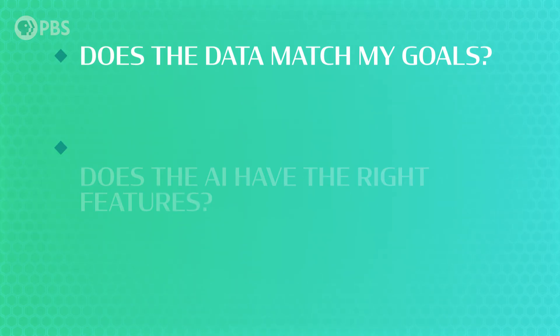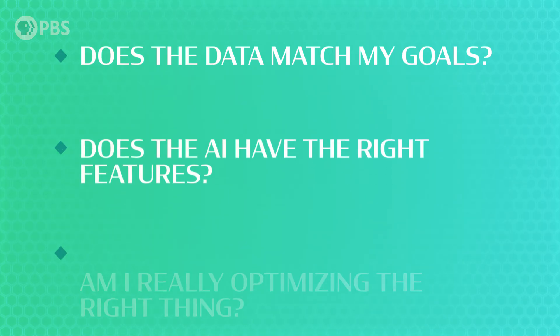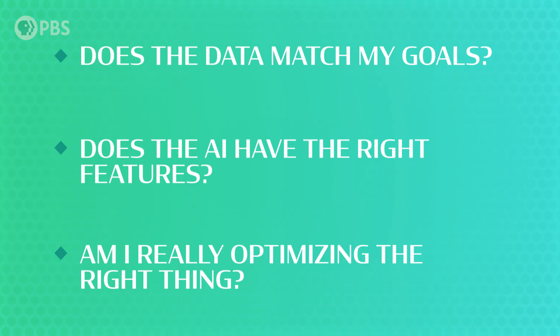It's important to note that every problem isn't this easy. For some AI, we can't just remove features that don't have clear meaning, or we might need to keep features because they're the only measurable values. In either case, it's usually extra important to have a human checking the results and asking a few important questions to avoid bias: Does the data match my goals? Does the AI have the right features? Am I really optimizing the right thing? And these questions aren't that easy to answer. So far in our labs, we've demonstrated the amazing abilities that AI can grant you, but as you can see, it's important to be cautious.